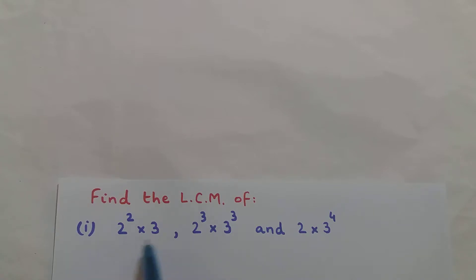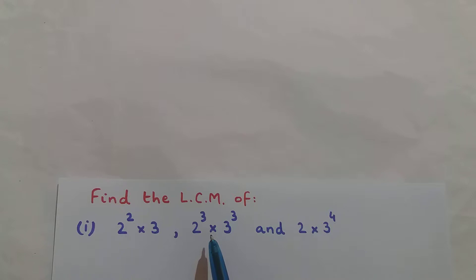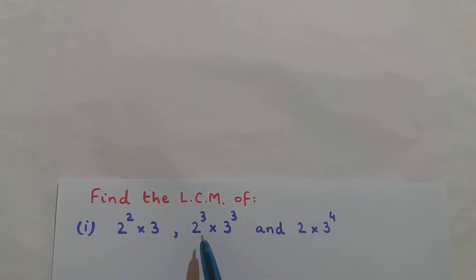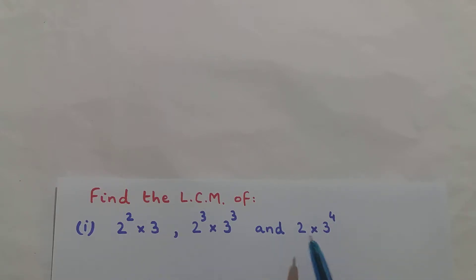Now in each of these expressions, everything is getting multiplied to each other. In the first expression, 2² is getting multiplied to 3. In the second, 2³ is getting multiplied to 3³. And in the third, 2 is getting multiplied to 3⁴.